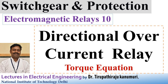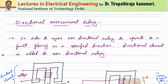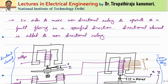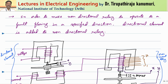Hi all, today we are going to discuss about directional overcurrent relays. We have already seen the non-directional overcurrent relay in our previous class. The disadvantage of the non-directional overcurrent relay is it will respond to overcurrent in both directions — it cannot sense the direction of the fault. There are some applications like feeder lines where two parallel lines are present, and in that case we need a directional relay.